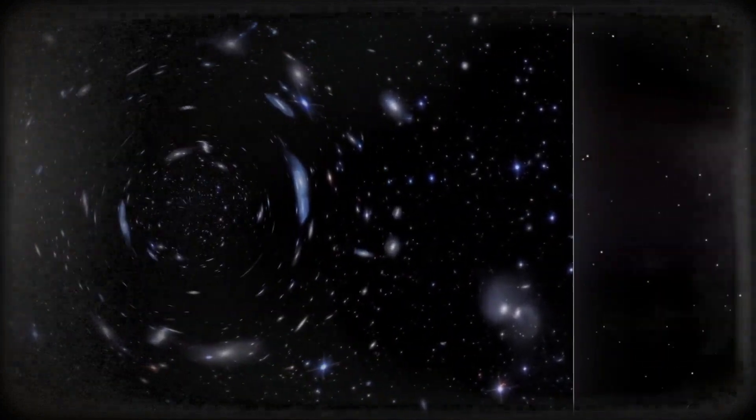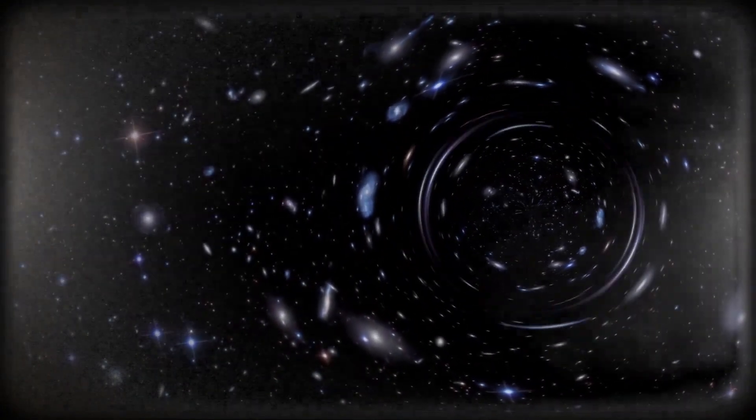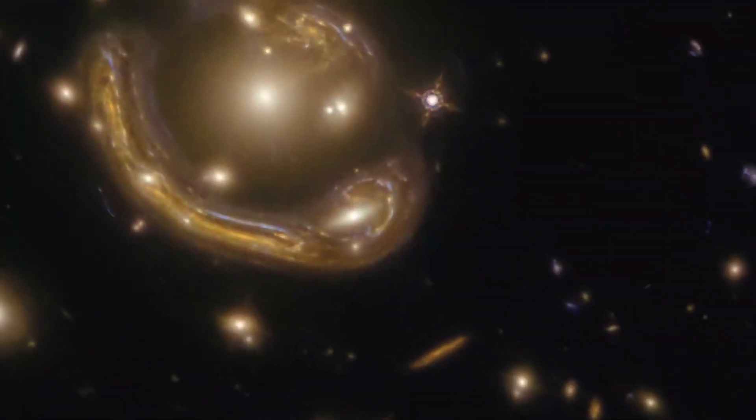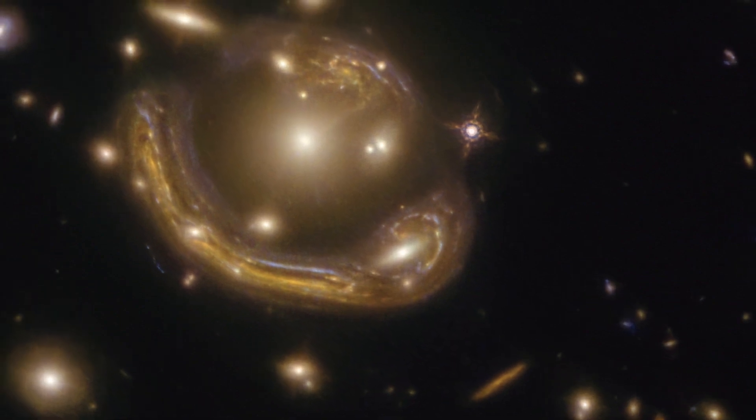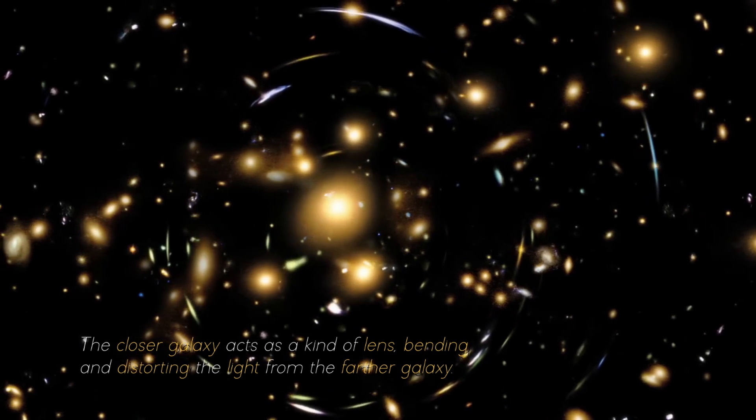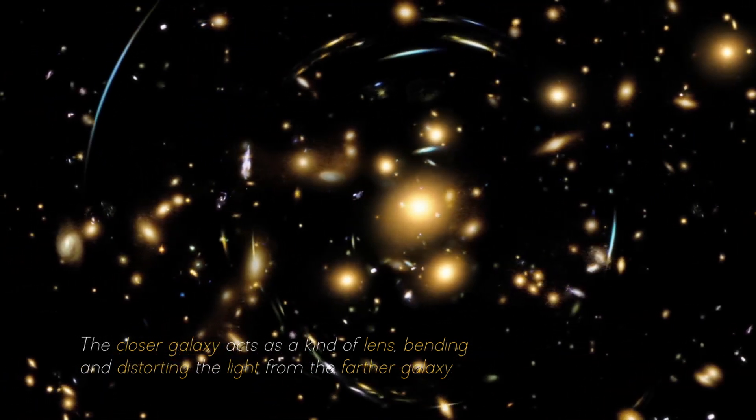In other words, any object with mass can bend space and time around it, which affects the path of light passing near it. Now, imagine that you have two galaxies lined up in our line of sight. One is closer to us, and the other is farther away. The closer galaxy acts as a kind of lens, bending and distorting the light from the farther galaxy.